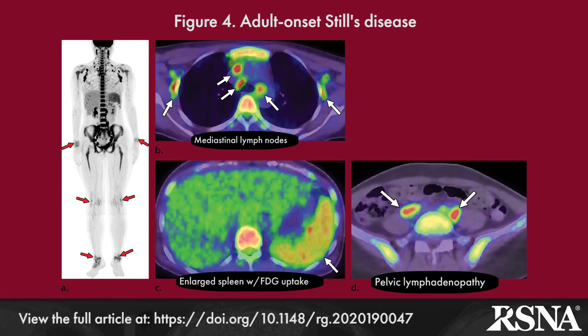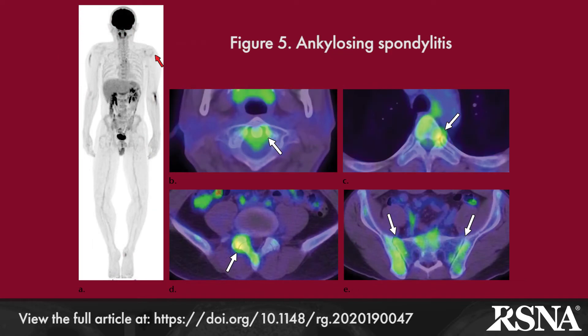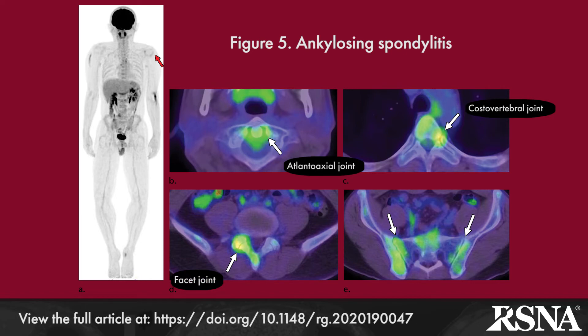The spondyloarthritides include ankylosing spondylitis, which is an inflammatory arthropathy and enthesopathy affecting young adult males, with a predilection for the axial skeleton. Associated with HLA-B27, patients present with low back pain and stiffness from sacroiliitis. While radiography and MRI play a primary role in diagnosis, FDG uptake in the sacroiliac and spinal joints, along with asymmetric large joint uptake, is seen.